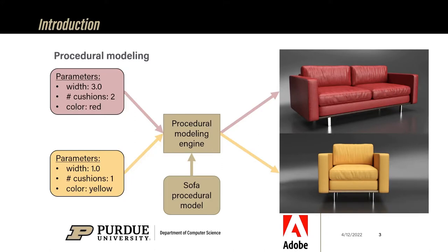To start, just a quick introduction about procedural modeling. A procedural model is a program that takes as input some parameters and automatically generates a virtual asset. If you change the parameters, what you get is another variation of the model. The issue though with procedural modeling is that any edits must occur in the parametric space, as opposed to the 3D space. Otherwise, you lose the procedural nature of the model.